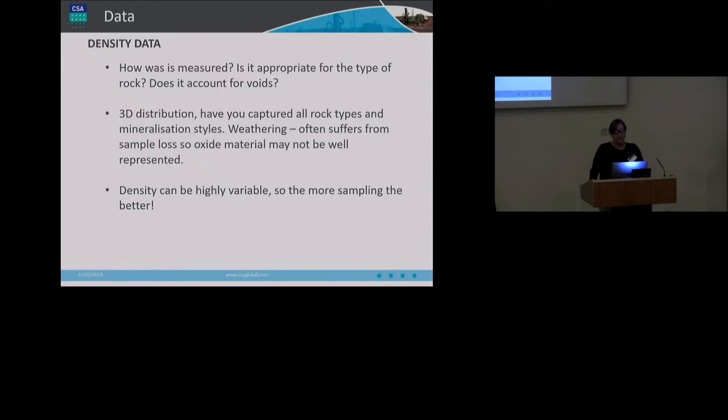I find that density is often overlooked, especially for early-stage projects. To really add value, one should consider how the different rock types and mineralisation styles could affect density, and ensure that appropriate measurements are collected for all important data sets. You should consider collecting data for each rock type, mineralisation style and weathering phase, including waste. And often oxide materials are underrepresented, as it's poorly consolidated and difficult to sample. You do need to consider voids when you're looking at density sampling.